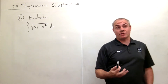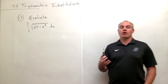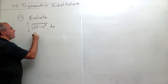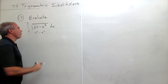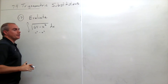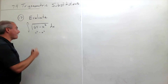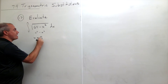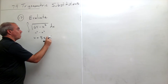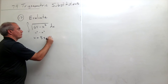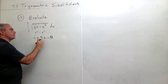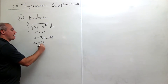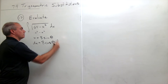We know right off the bat that we're going to be using a trigonometric substitution, so we need to know what form we're dealing with here. This is the form a squared minus x squared. When we have a form a squared minus x squared, then what we substitute for x is equal to a — which in this case a squared gives us 8 — so x equals 8 sine of theta. Taking the derivative, dx is 8 cosine theta d theta.